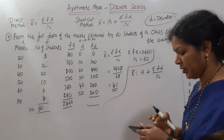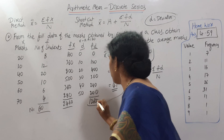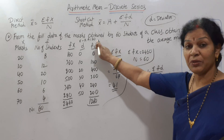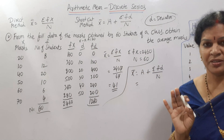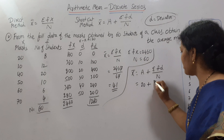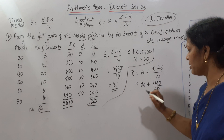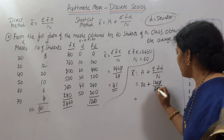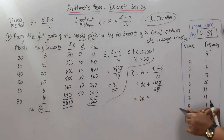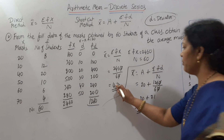After computing all FD values, the total ΣFD comes to 1260. Now apply in the formula: X̄ = A + ΣFD / N = 20 + 1260 / 60 = 20 + 21 = 41. So X̄ = 41. Same answer as the direct method. You can take any assumed mean A; it does not matter. Both methods give the same result.